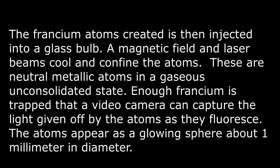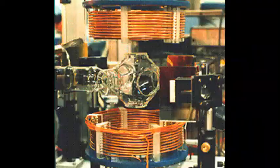The francium atoms created are then ejected into a glass bulb. A magnetic field and laser beams cool and confine the atoms. These are neutral metallic atoms in a gaseous unconsolidated state. Enough francium is trapped that a video camera can capture the light given off by the atoms as they fluoresce. These atoms appear as a glowing sphere of about 1mm in diameter. Neutral francium atoms created in this process are trapped in this machine.